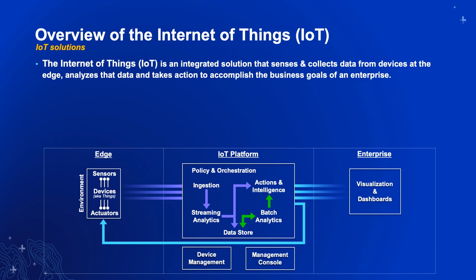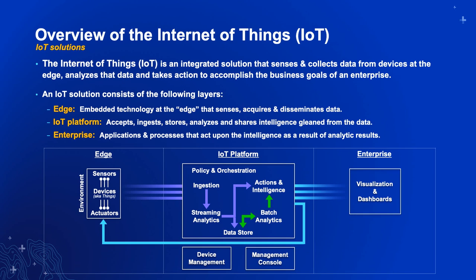If you look at IoT and how we make this work, we divided it into components. On the left-hand side are so-called edge technologies that deal with sensors and transmission from the source. Then we have the IoT platform in the middle that does orchestration, policy, ingestion, and analytics — whether real-time or batch. It can also manage and persist data for further analysis. On the right-hand side, we have the enterprise that provides visualization, applications, dashboarding, and everything else.